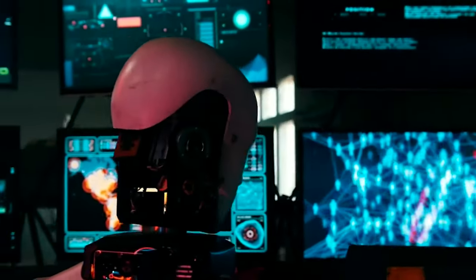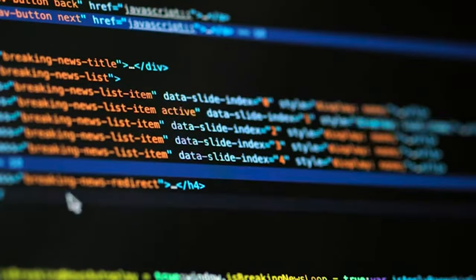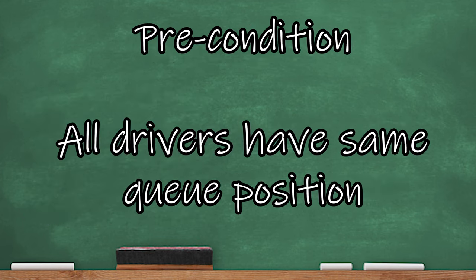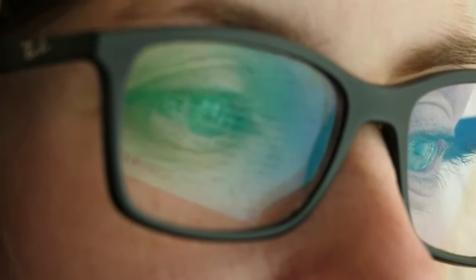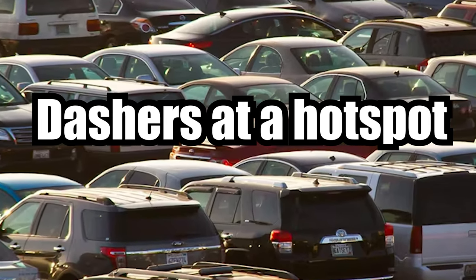Let's deep dive and run through some game theory situations to figure out the best thing for you to do to give yourself the edge out there in the field. Game theory is where we create a situation and use logic to understand the best outcome for ourselves to get orders. For our scenario setups: Driver A is in a hotspot, Driver B is parked outside of the hotspot between other restaurants, and Driver C is parked outside of the hotspot on the other side with no restaurants close by. We assume all drivers are equal in position for next available driver.